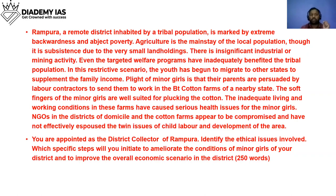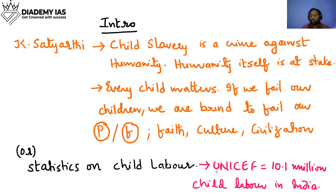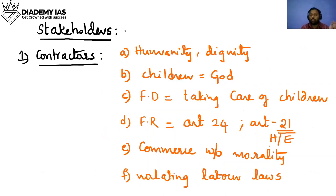You can quote Nobel Laureate Kailash Satyarthi, who said: 'Child slavery is a crime against humanity; humanity itself is at stake. Every child matters — if we fail our children, we are bound to fail our past, future, faith, culture, and civilization.' Try to remember a good quote from Kailash Satyarthi. Alternatively, you can quote UNICEF statistics: in India there are about 10.1 million child laborers.